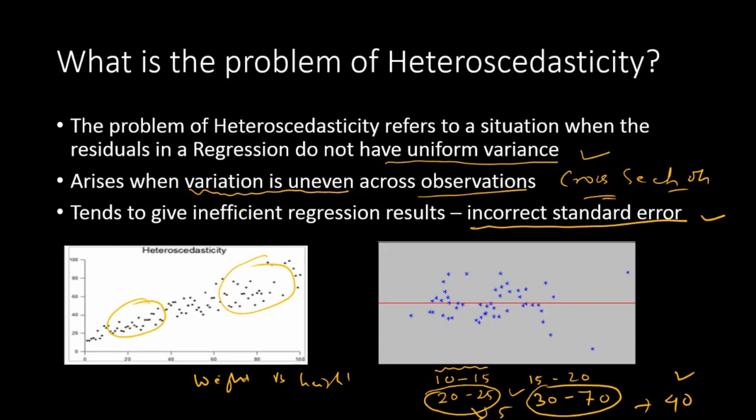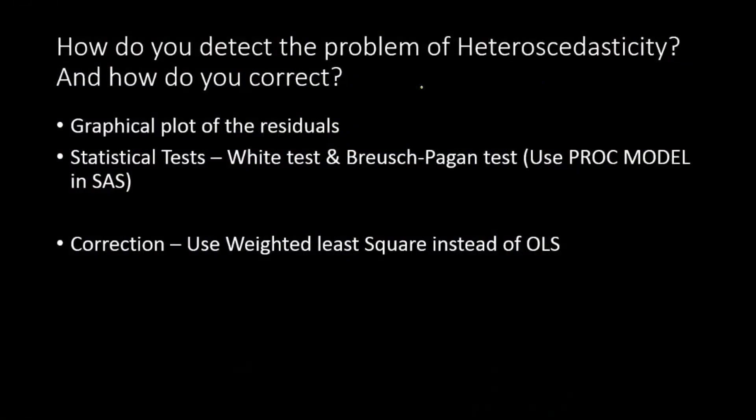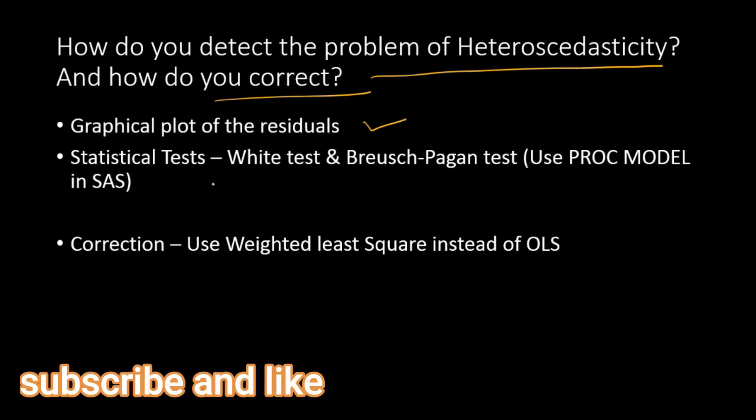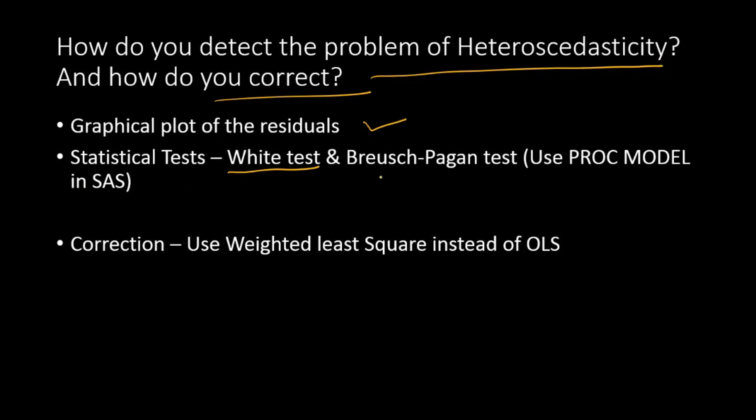One of the best ways to detect heteroscedasticity is to create this plot and see how the observations are distributed. The next question is: how do you detect the problem of heteroscedasticity and how do you correct? Graphical plot is a good one, but there are also statistical tests—White test and Breusch-Pagan test. You can use PROC MODEL in SAS to come up with these statistics.